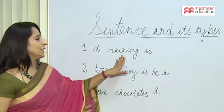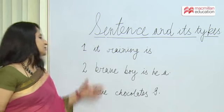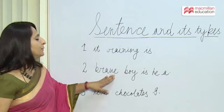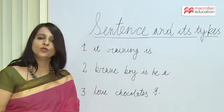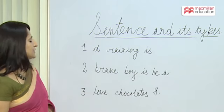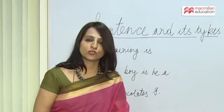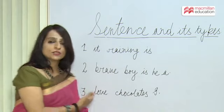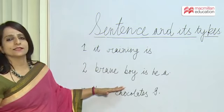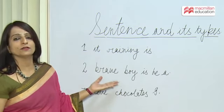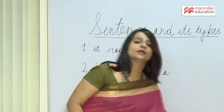The first sentence says 'it raining is' — is it making any sense to you? I'm sure it's not. The second sentence reads 'brave boy is he a' — could you understand anything? No. The third sentence says 'love chocolates.' I'm sure you all love chocolates, but this sentence is not making any sense because in all these sentences the words have not been arranged in the right way.